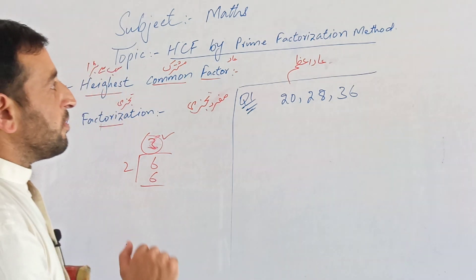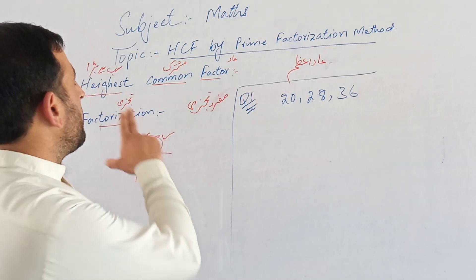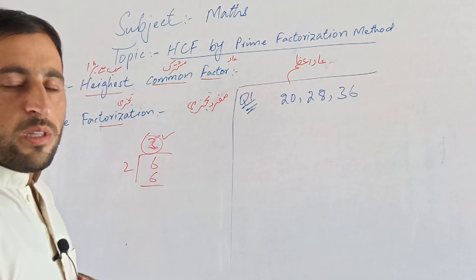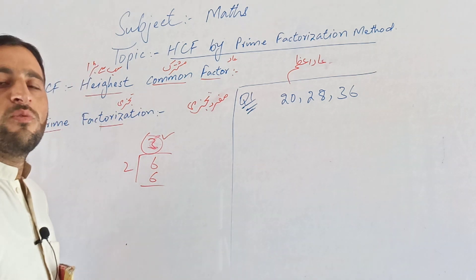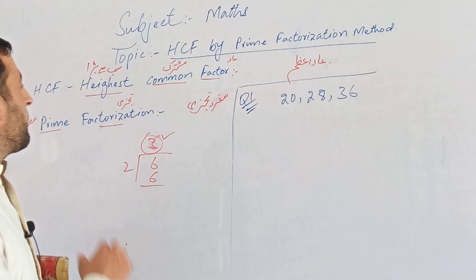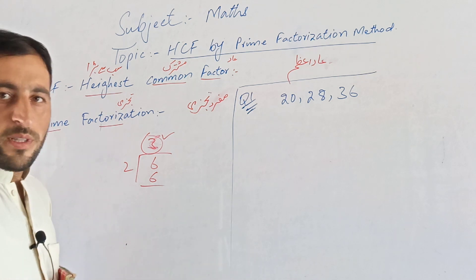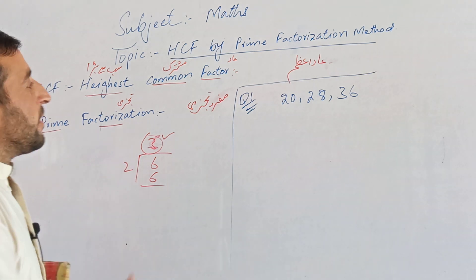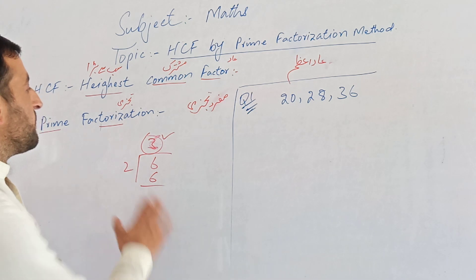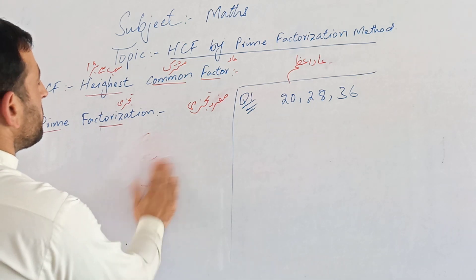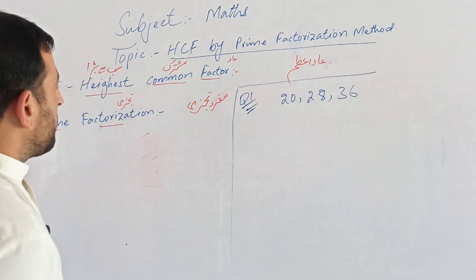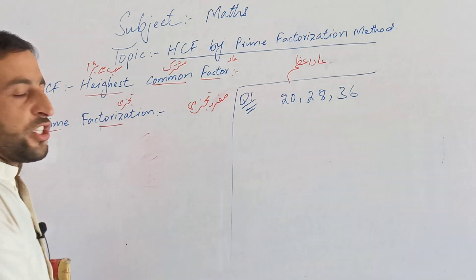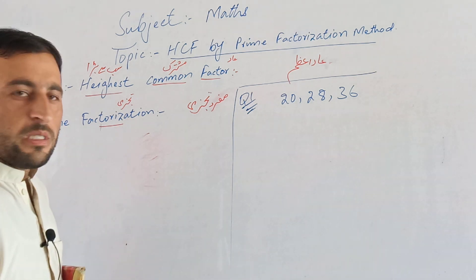There are two different ways to find the HCF. The first is the prime factorization method and the second is the division method. I will explain the prime factorization method.